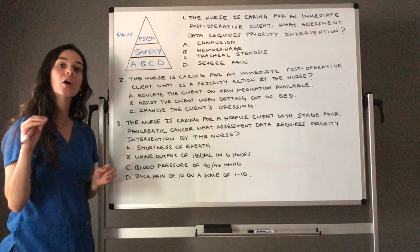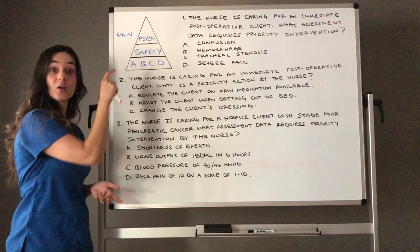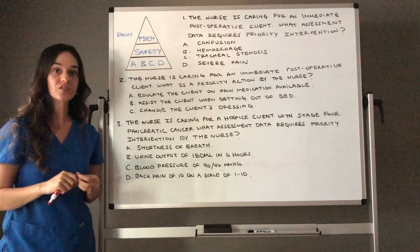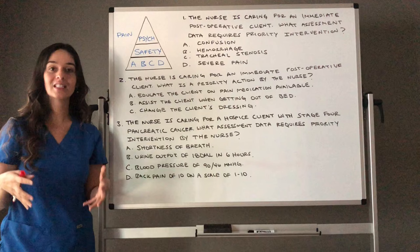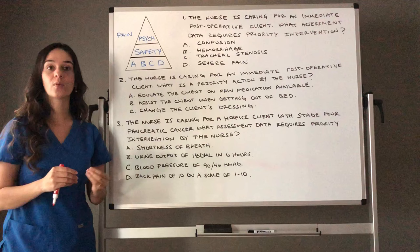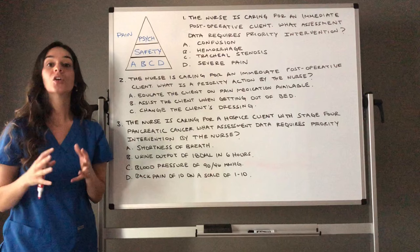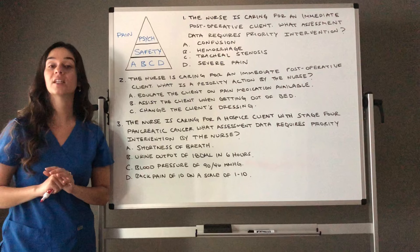For other physical problems beyond the ABCDs — think: do they trump safety? Example: a reddened area on the buttocks or sacrum is a physical problem — potential pressure ulcer — we must address it. However, if you also have a confused client trying to get out of bed, who is in more immediate danger? The confused client. That safety problem trumps the physical problem of reddened skin. Ask yourself: who would die first?